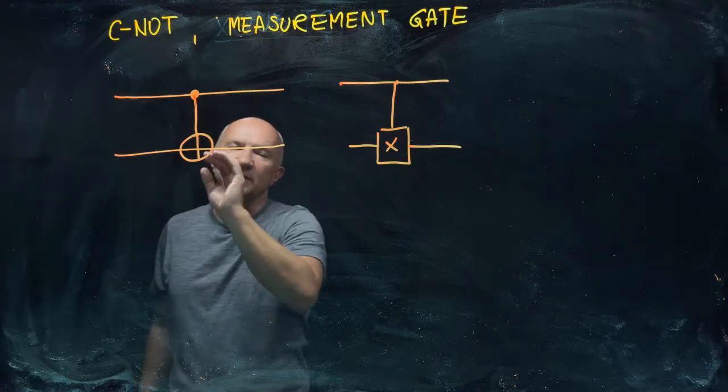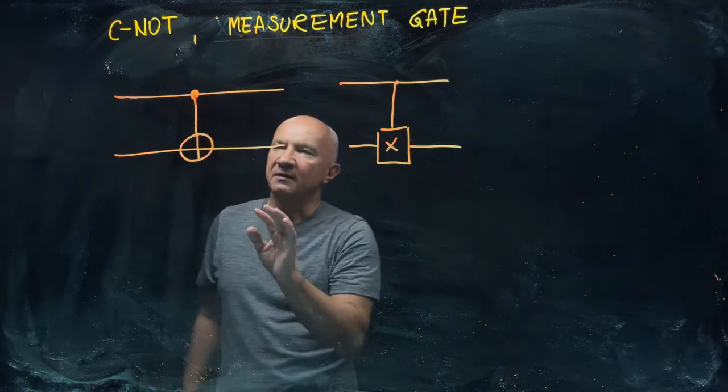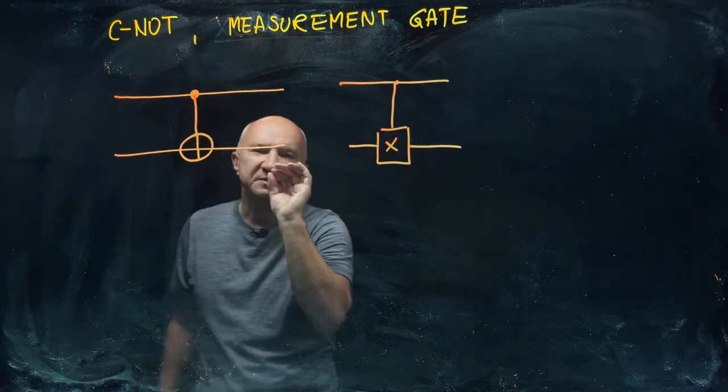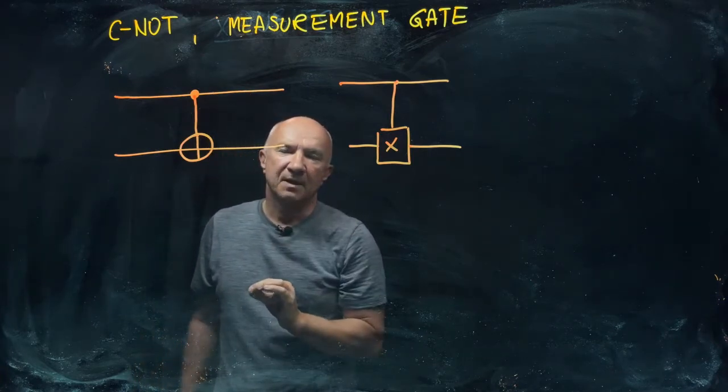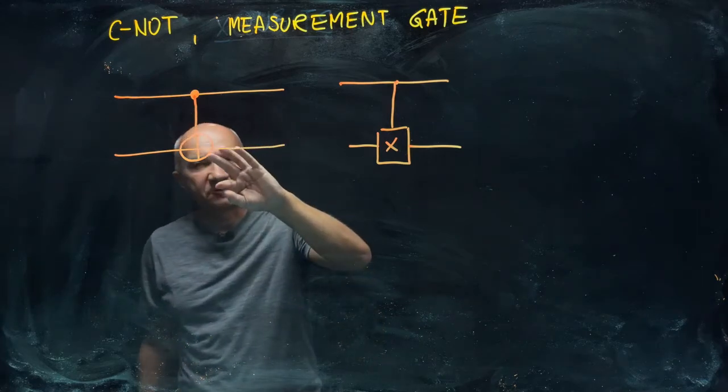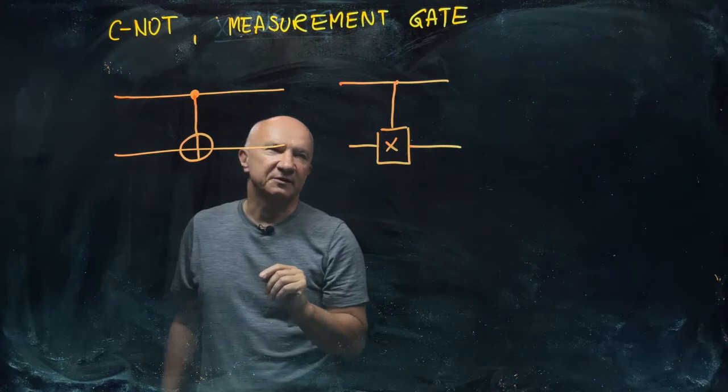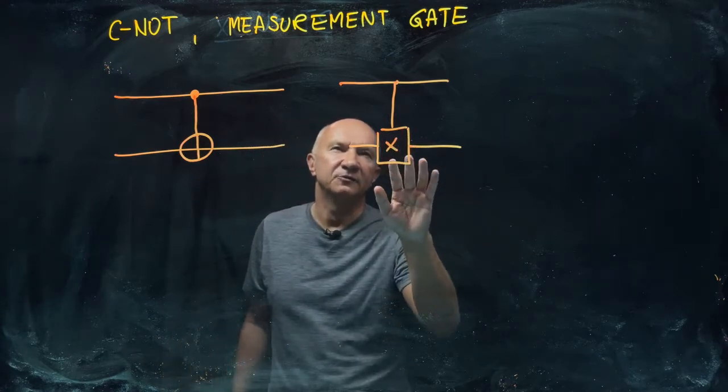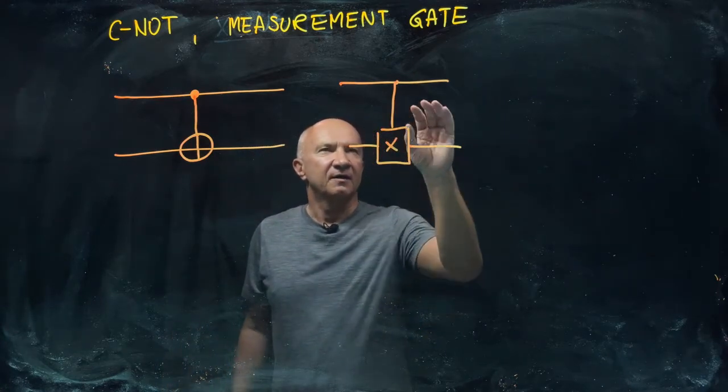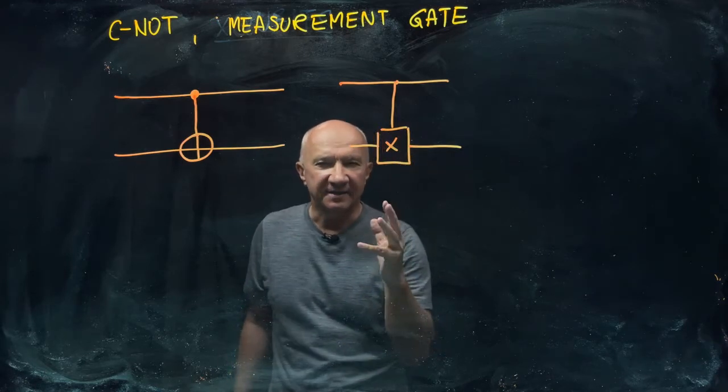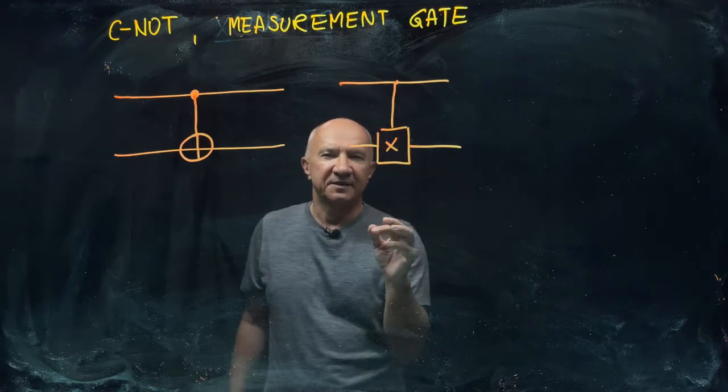If the first qubit is in state zero, then nothing happens to the second qubit. And if the first qubit is in state one, then the operation logical NOT or bit flip is applied to the second qubit. That's why you have an alternative diagram here which essentially says the same thing. The X here stands for the X gate, single qubit X gate, or bit flip.